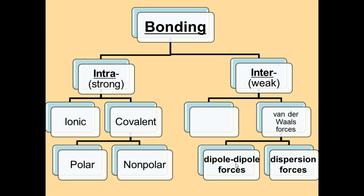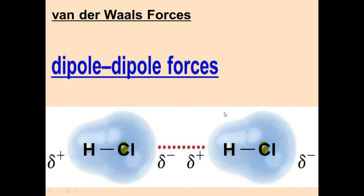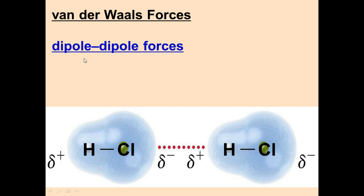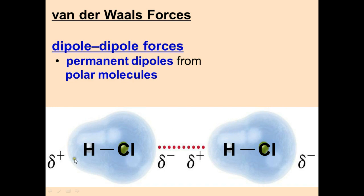The second van der Waals force is dipole-dipole. Dipoles are the partial charges in polar molecules. For example, H shares electrons with chlorine to form an octet, but chlorine is more electronegative — it hogs the electrons. So hydrogen has slightly fewer electrons and becomes slightly positive, while chlorine becomes slightly negative. Just like dispersion forces, the positives attract the negatives, forming a bond — called a dipole-dipole force. This is the second type of IMAF and the second strongest.